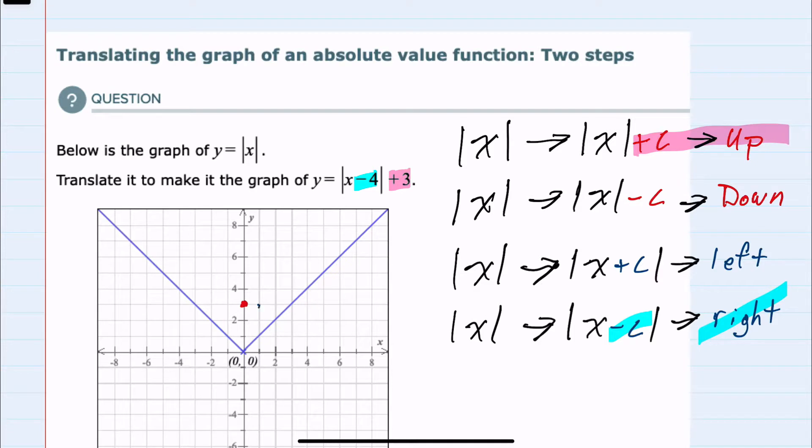So one, two, three, four to the right. And now that I've shifted the vertex, I can draw the absolute value. Our new graph has been shifted up three and to the right four units.